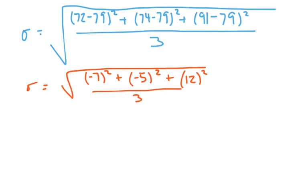You'll see that this cleans up in a hurry. Negative 7 squared will be 49. Negative 5 squared is 25. And 12 squared is 144. Still all divided by 3.